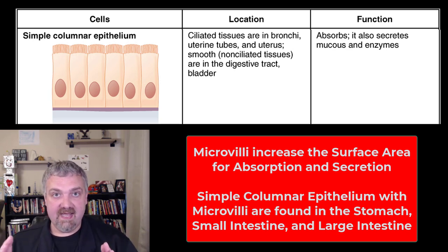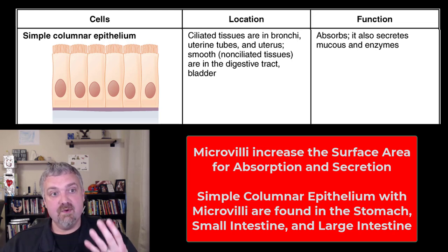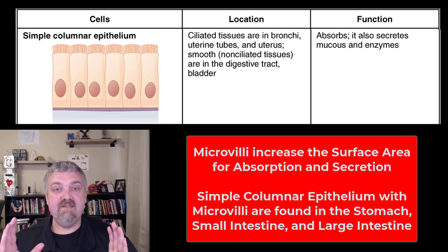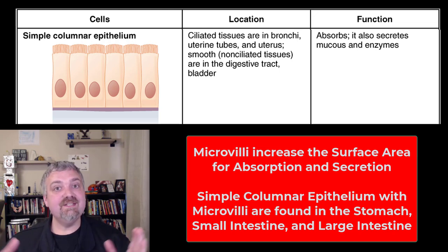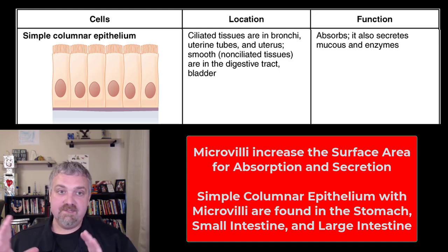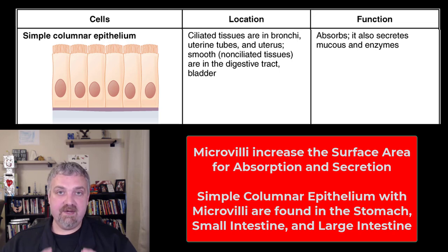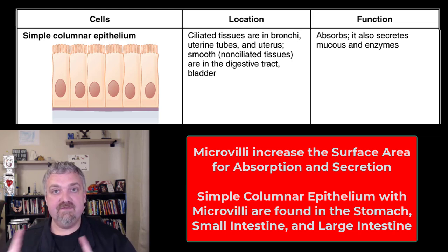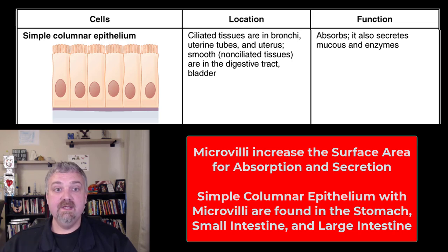They're going to have microvilli. Remember, a villus is a finger, so microvilli would be microscopic fingers. The key function of microvilli is to increase surface area so you can absorb and secrete more. So just to review: microvilli — think increased surface area for absorption and secretion. Cilia — think the movement of material.